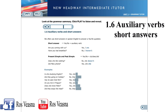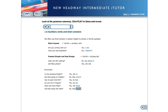Here are some more examples. Is she studying English? Yes, she is. Are they going on holiday? No, they aren't. Has he seen that film? Yes, he has. Do you live in Prague? Yes, we do. Does she know Peter? Yes, she does. Did they enjoy the meal? No, they didn't.